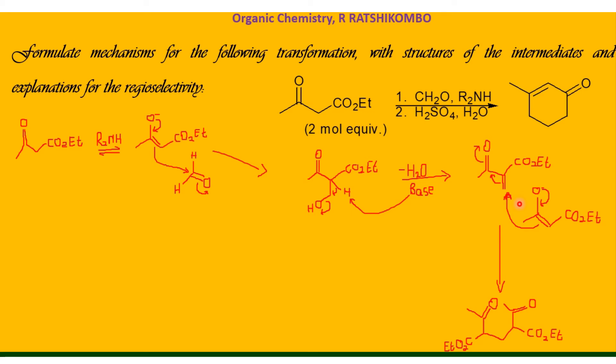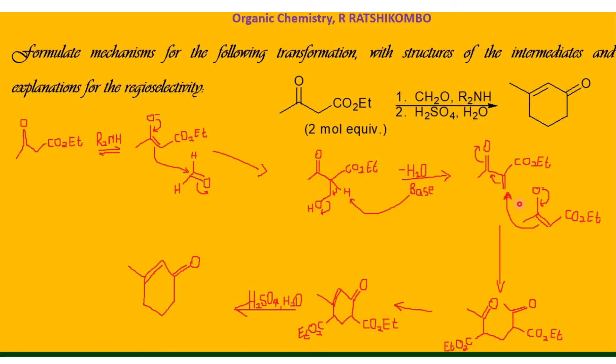After the addition of another enolate, the ketone can do an aldol reaction. The enolate formed with regio-selectivity at the methyl group of one attacks the carbonyl of the other in an intermolecular reaction to give us this intermediate. From this, hydrolysis and decarboxylation will follow to leave the final product.